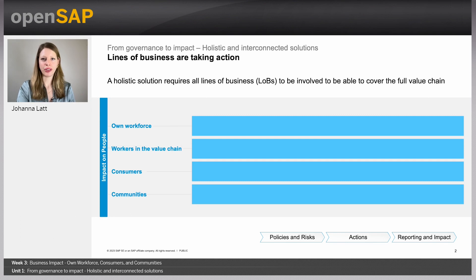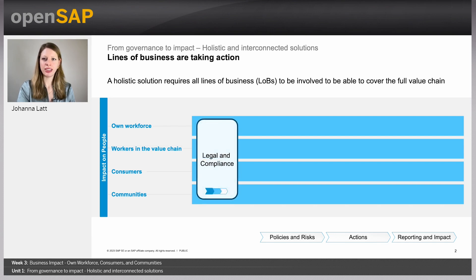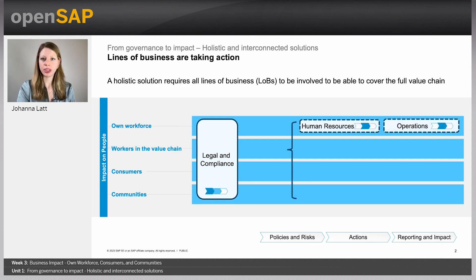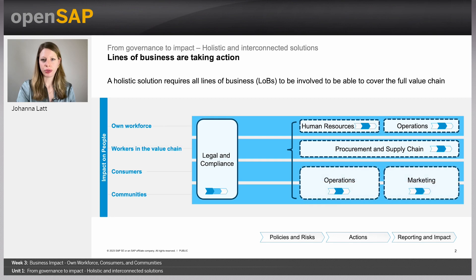A holistic solution for human rights due diligence requires all lines of businesses, or LOBs, to be involved. We need oversight on corporate level covering the full value chain — from own workforce to workers in the value chain, consumers and communities. To deal with step one in the process, meaning policies and risks, you often have legal and compliance in the lead on corporate level, working together with all other lines of businesses to assess and manage risks and set up policies.